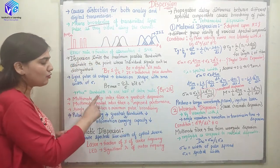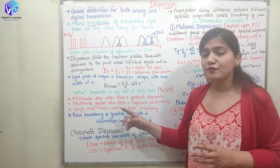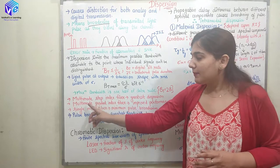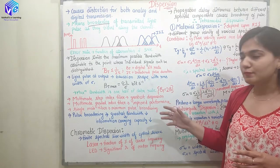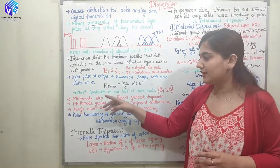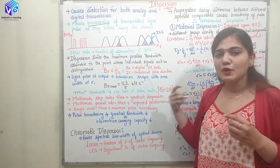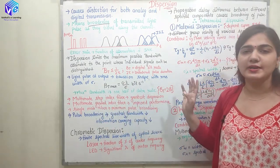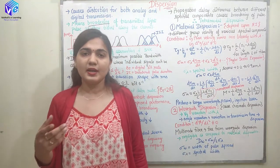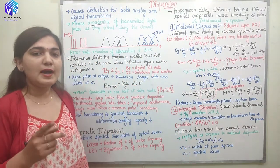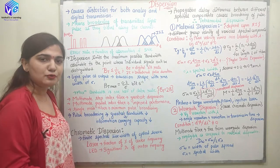If I have a multi-mode step index fiber, because I have a lot of modes, I would be having the greatest dispersion. In the multi-mode graded index fiber, I have improved performance — lesser dispersion effect as compared to multi-mode step index fiber. If I want lesser losses, I will use the multi-mode graded index fiber. If I want to use the multi-mode fiber, I will avoid using the step index fiber and use the graded index fiber because it has improved performance.